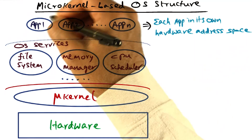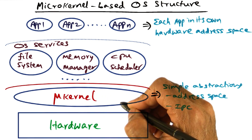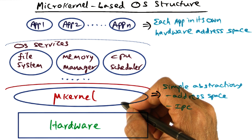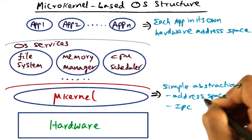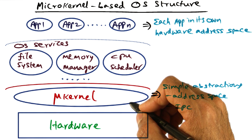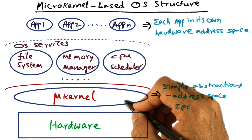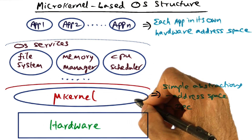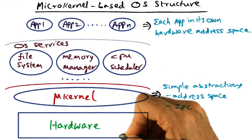As before, each of the applications is in its own hardware address space. The microkernel runs in a privileged mode of the architecture and provides simple abstractions such as threads, address space, and inter-process communication. In other words, a small number of mechanisms are supported by the microkernel. The key word is mechanisms — there are no policies ingrained in the microkernel, only mechanisms for accessing hardware resources.